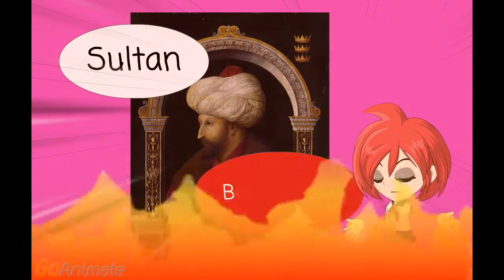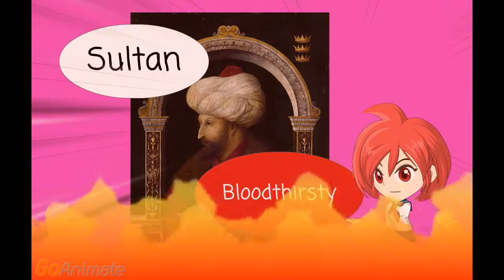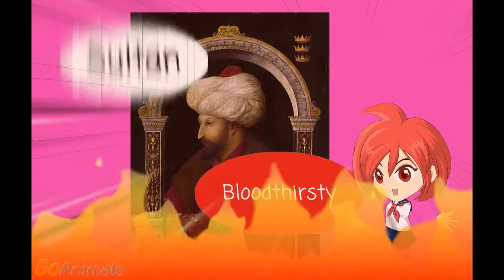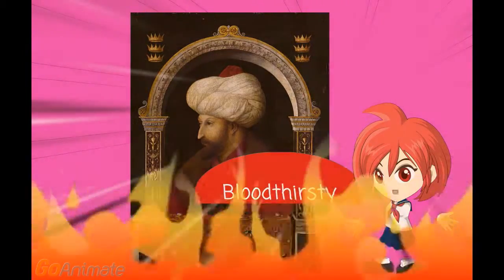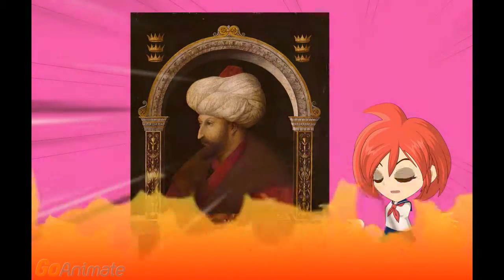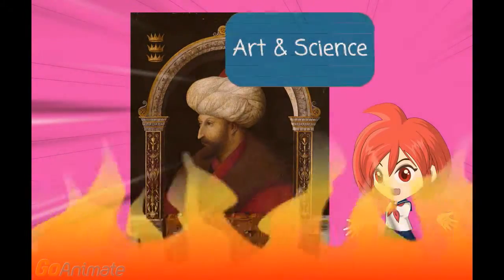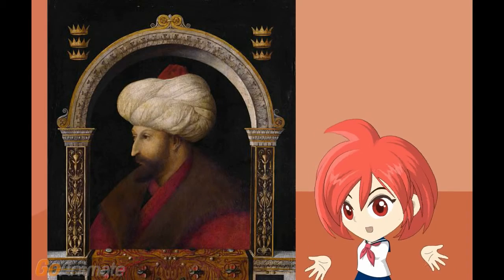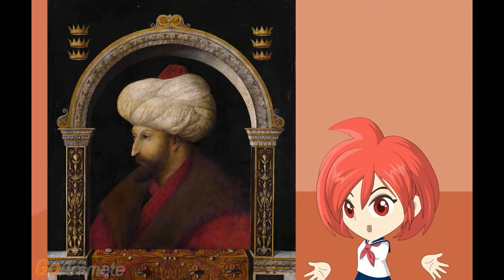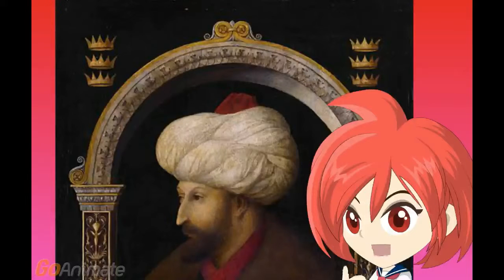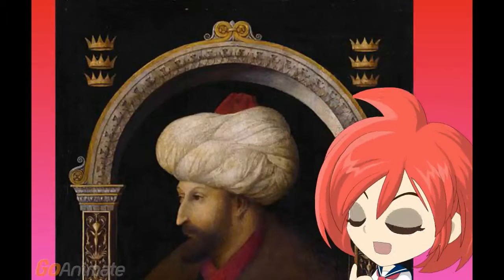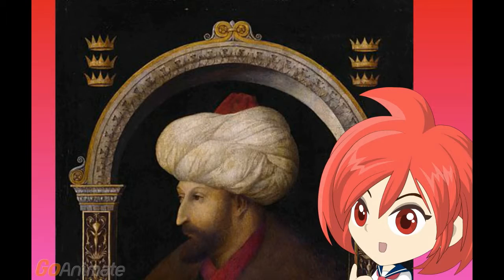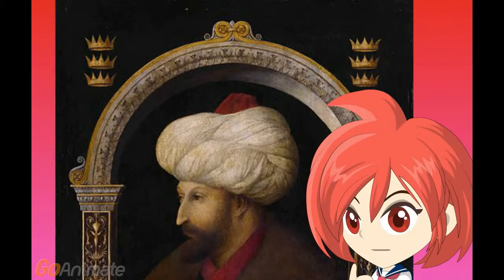Mohammed 2nd was a controversial man — a great Sultan but bloodthirsty, a lover of arts and sciences and at the same time a lover of the supernatural. The western interpretation of this portrait places the Sultan under a pointed arch with Roman decorations, while the oriental vision shows him beyond the palace door, and so out of reach.